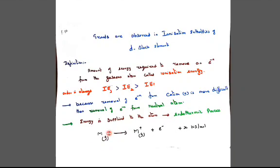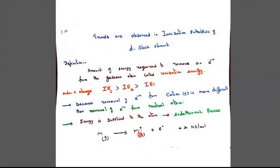Consider a neutral gaseous atom M. We are going to remove an electron — it is easy to remove. For example, take sodium. One electron is removed; it requires 500 kilojoule per mole. It becomes Na⁺.